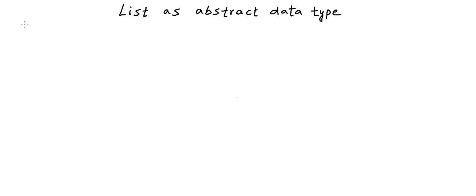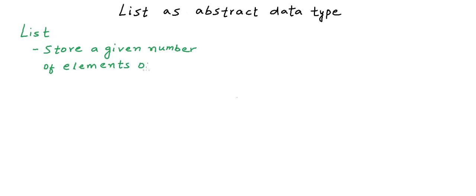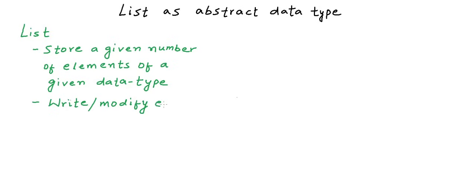Let us first define list as an abstract data type. When we define an abstract data type, we just define the data it will store and the operations available with the type — we do not go into implementation details. Let us define a very basic list: I want a list that can store a given number of elements of a given data type. This would be a static list — the number of elements will not change, and we will know the number of elements before creating the list.